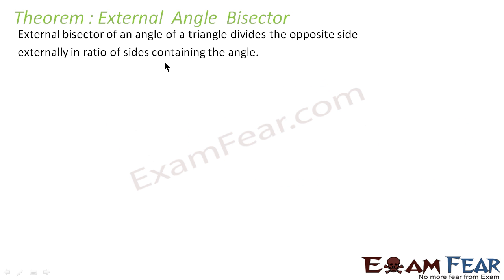The external angle bisector of an angle of a triangle divides the opposite side in the ratio of the sides containing the angle — similar to the internal angle bisector. Let us draw this.